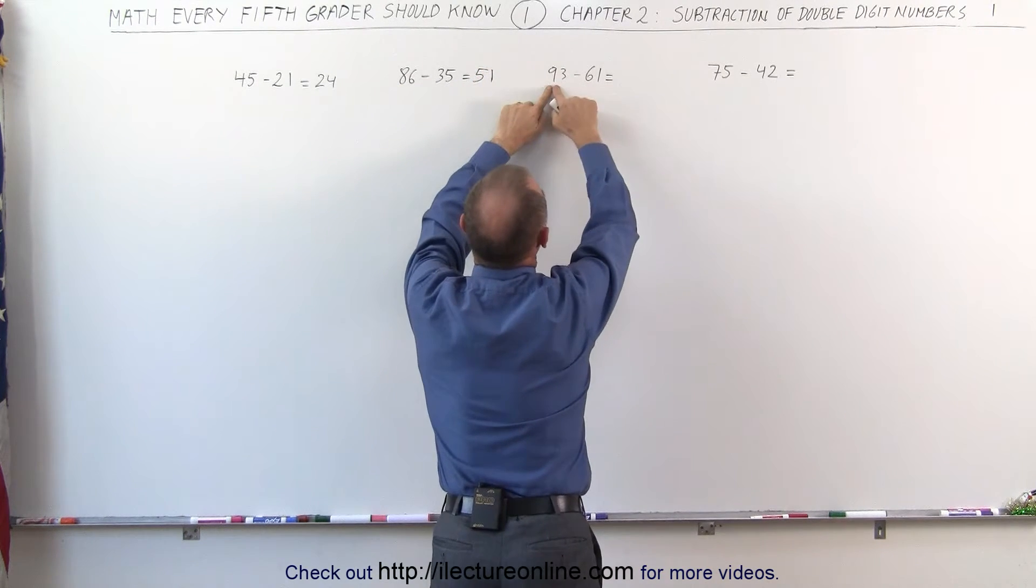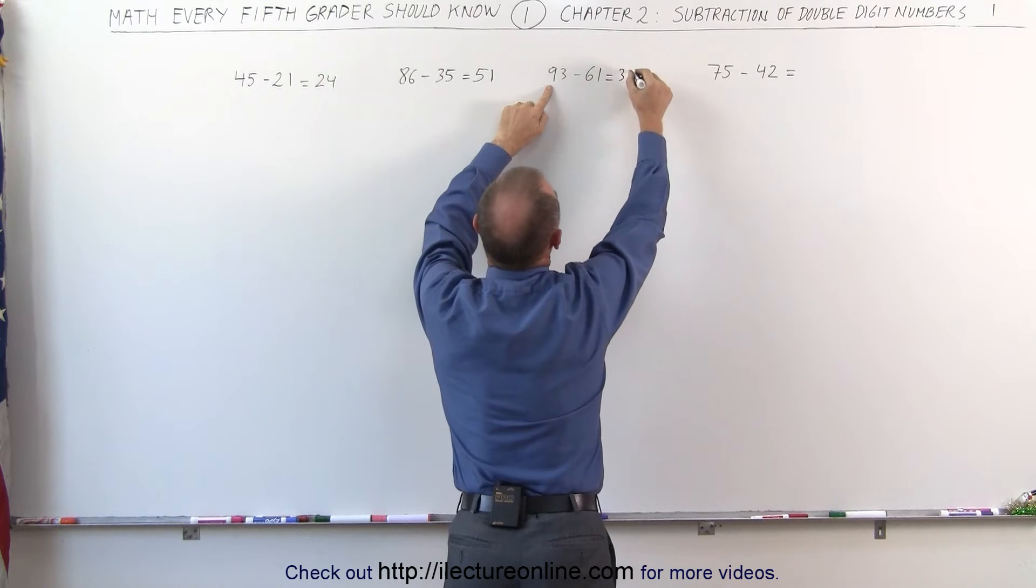Here we subtract the 6 from the 9, that gives us a 3. Subtract the 1 from the 3, that gives us a 2.